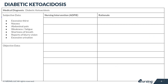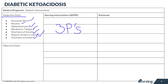Let's get started with our care plan by looking at the subjective data associated with DKA. Things you're going to see with this patient include excessive thirst, nausea, abdominal pain, weakness and fatigue, shortness of breath, sometimes blurry vision, and excessive urination. Remember, anytime you've got a patient with a high level of blood sugar, think about the three P's. The first P is polydipsia, which is excessive thirst. The second P is polyuria, which is excessive urination. And the third is polyphagia, where you've got excessive hunger.